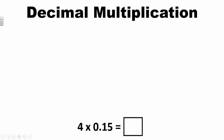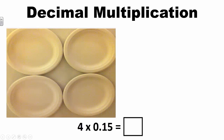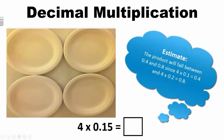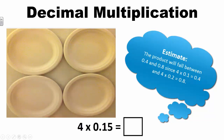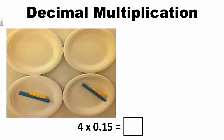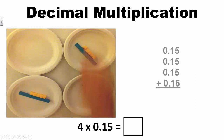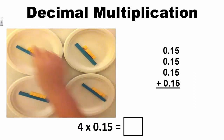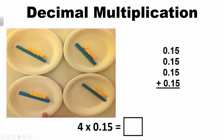The first multiplication problem we will look at is 4 times 15 hundredths. Using the meaning of multiplication, this problem can be thought of as four groups of 15 hundredths. Each paper plate represents one group. I need to place 15 hundredths in each group. I can use repeated addition to find the total number of blocks: 15 hundredths plus 15 hundredths plus 15 hundredths plus 15 hundredths equals 60 hundredths, which equals 6 tenths.